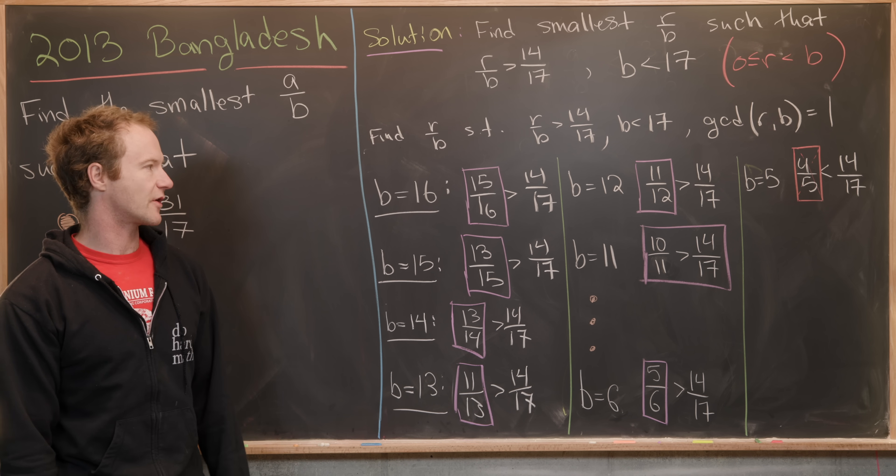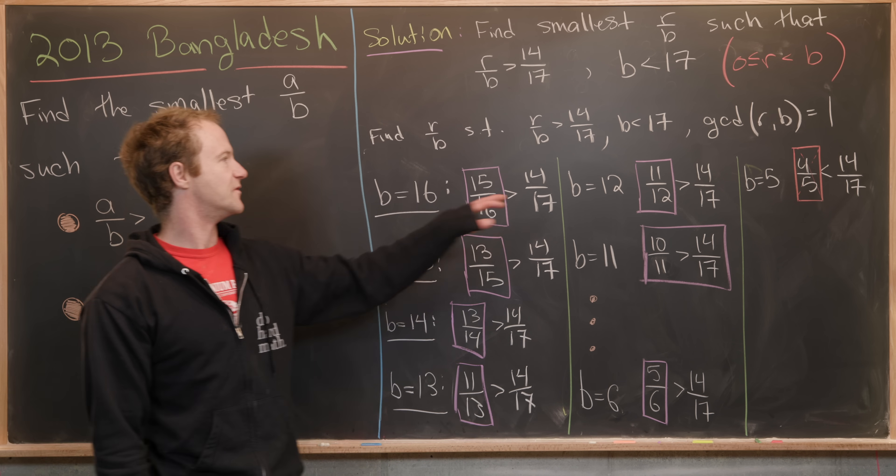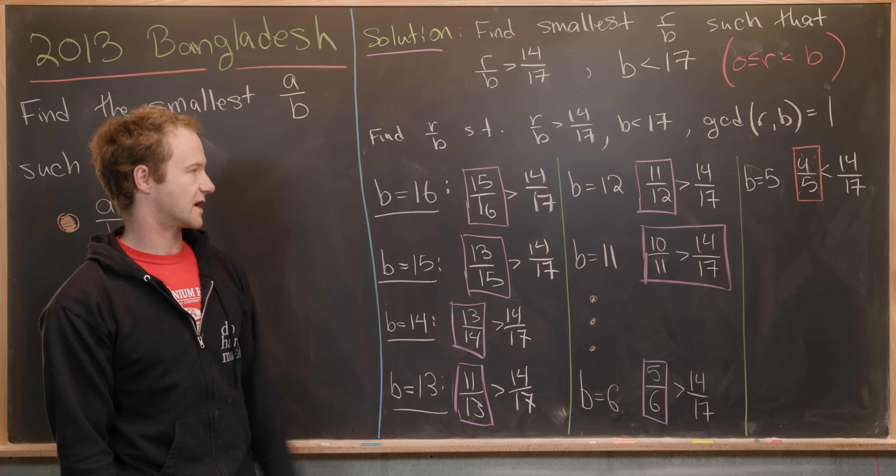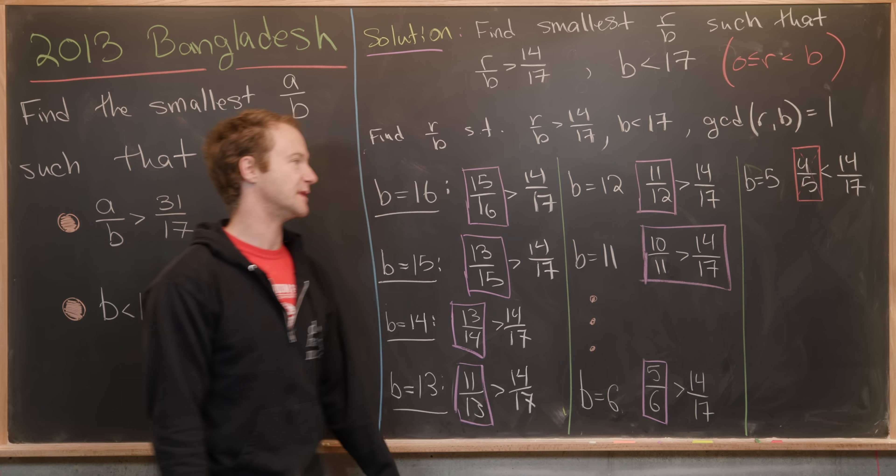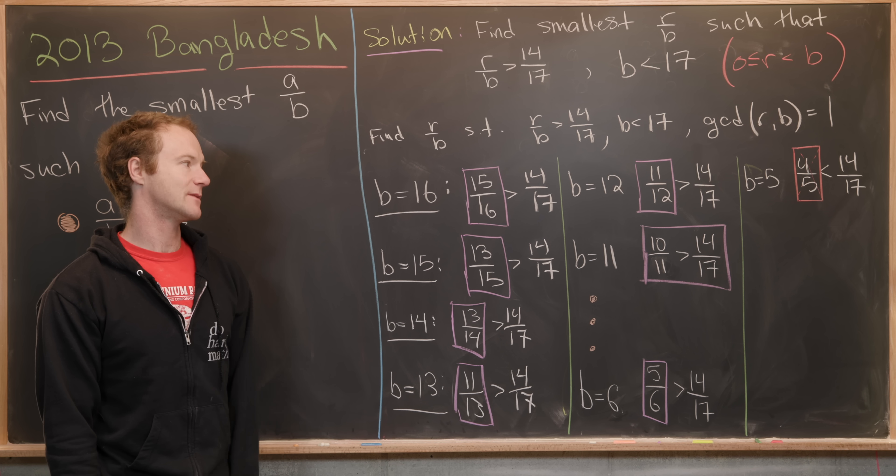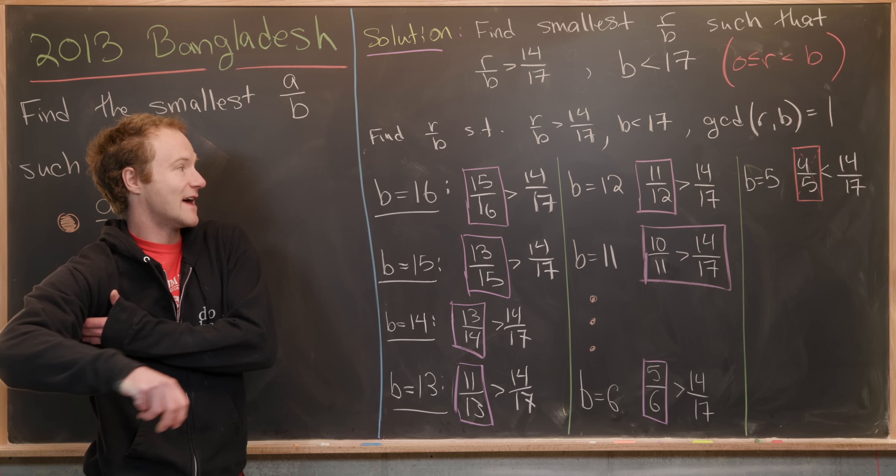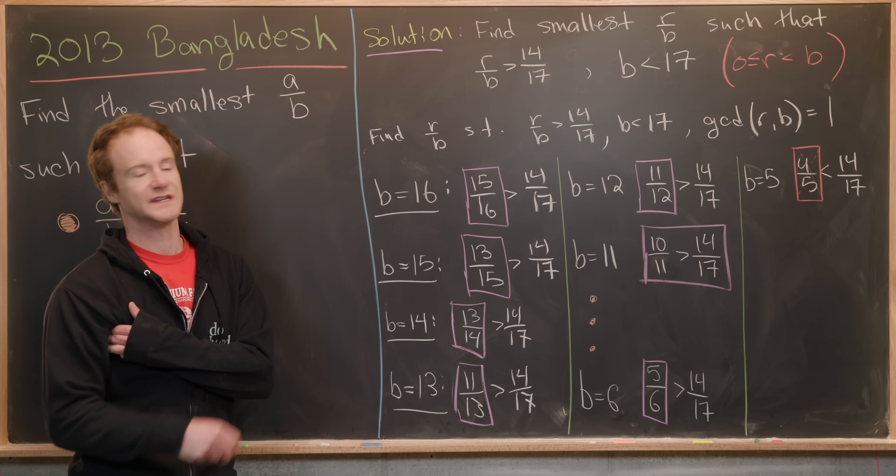If B is equal to 12, that's our denominator, 11 over 12 is bigger than 14 over 17. But the next number that's relatively prime to 12 would be all the way down at seven, which is smaller than 14 over 17.